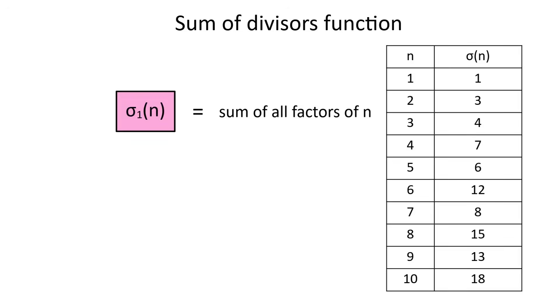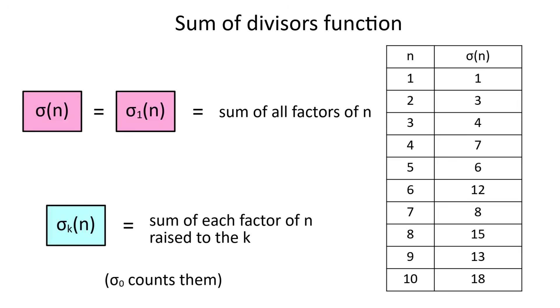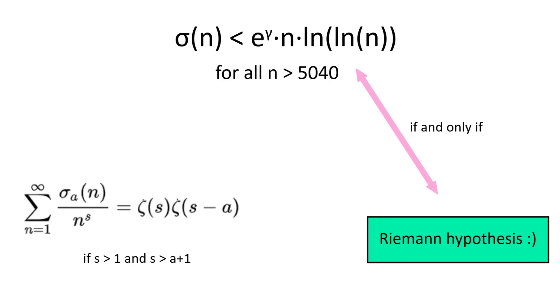This function is called the sum of divisors function and is denoted sigma 1 of n, or just sigma of n. It's actually just a special case of the generalized function sigma k of n, where you raise each divisor to the power of k before adding them. Since any number to the 0 is 1, this explains why sigma 0 counts the factors. The sigma function is pretty important in number theory, with connections to the famous Riemann zeta function.